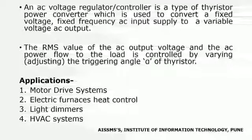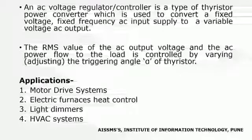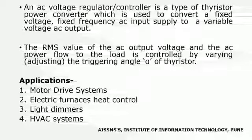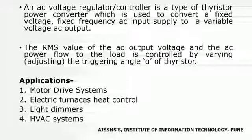What are the applications of an AC voltage regulator? It is used in motor drive systems, industrial heating and domestic heating applications, electric furnaces for heat control, as light dimmers, in HVAC systems, and in on-load tap changers of transformers.